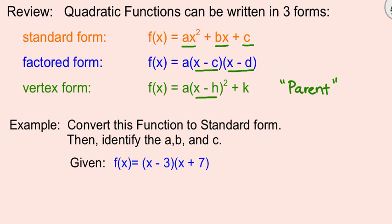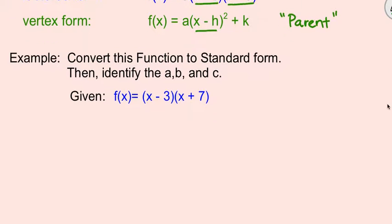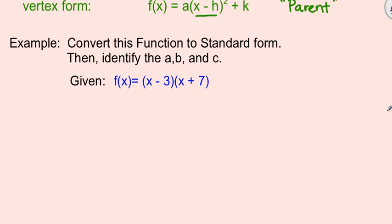What we're going to do is take this example that is in factored form, and we're going to convert it to standard form. So we're going to FOIL or distribute, so x times x is x squared, x times 7 is 7x, negative 3 times x is negative 3x, and then negative 3 times 7 is negative 21.